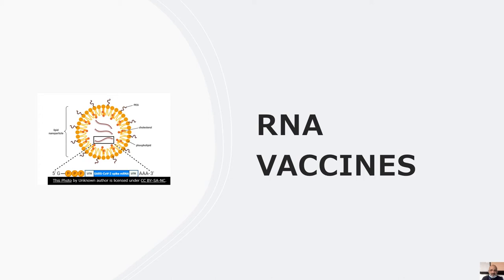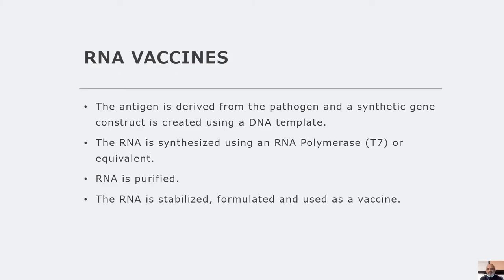RNA vaccines have gained precedence in the current pandemic situation. The production strategy is similar to DNA vaccines — the target antigen is cloned onto a plasmid. However, there is a T7 RNA polymerase binding site upstream of the antigenic principle. The plasmid is linearized and the entire process of RNA production can be carried out in an in vitro environment. A polymerase such as T7 RNA polymerase is utilized to produce RNA fragments which represent the transcripts of the original virus. These transcripts use the internal ribosome entry site as part of the gene construct, and when this RNA transcript is introduced into the cells, it is translated into the respective protein. The RNA must be stabilized, formulated, and used as a vaccine.